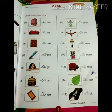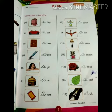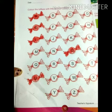Ninth: a fan. Tenth: a lamp. Eleventh: a queen. Twelfth: a rose. Thirteenth: a leaf. Fourteenth: a zip. Now turn to page number ten. Over here, what you will do is color the toffees with the special letters — a, e, i, o, u.